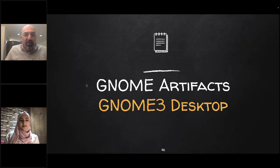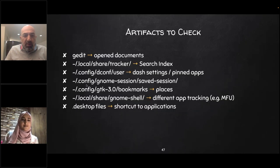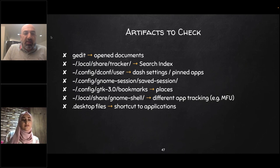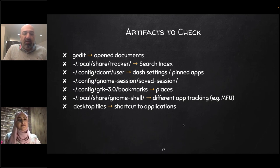For GNOME 3 artifacts — listed here due to time limitations — gedit is the main text editor on GNOME 3, and its session files work similarly to what we saw for MATE: you can trace back which text files were opened. The tracker in GNOME is similar to Baloo in KDE — it tracks all keywords and files on the GNOME system.